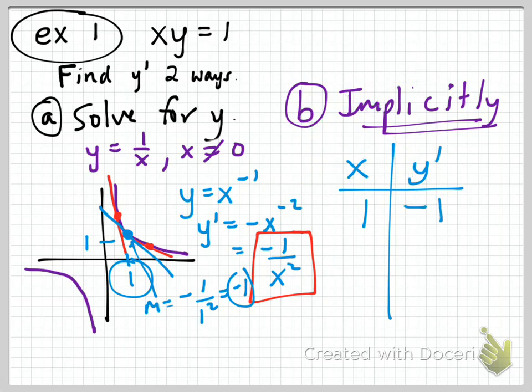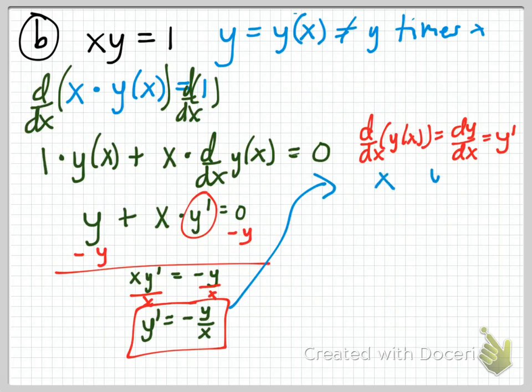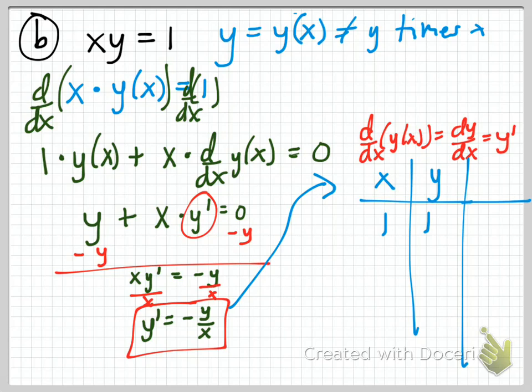So y prime equals negative y over x. We get negative y, which is 1, over x, which is also 1 — giving us negative 1 again, exactly what we got the first time. We got it a different way, but it's exactly the same answer, and it'll work with any values of x and y you plug in to either formula.